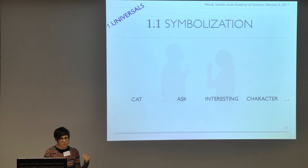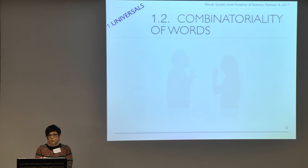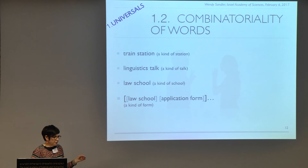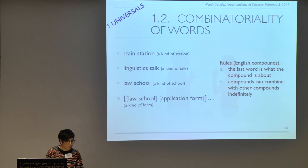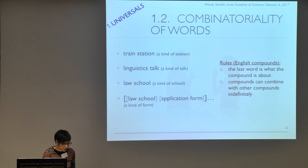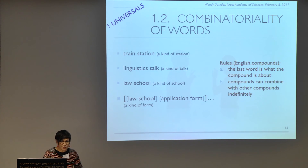Let's look at the universals and see whether sign language has them. First, symbolization: in spoken language, we have words that symbolize concepts — nouns, verbs, and abstract concepts as well. One of the ways we combine elements is by combining words with each other. Train station, linguistics talk, law school — these are compound words. You put two words together and you get a new word, giving you a huge possibility for a large vocabulary, and it must be done according to rules. In English, the last word is what the compound is about: a train station is a kind of station. Compounds can combine with other compounds indefinitely — law school application form, which is a kind of form, and so forth.